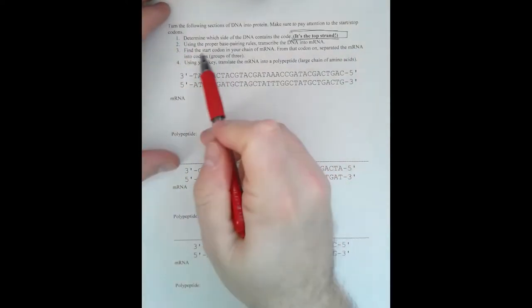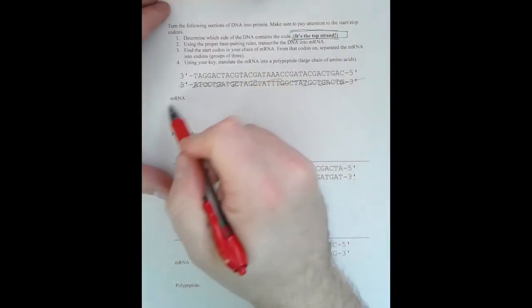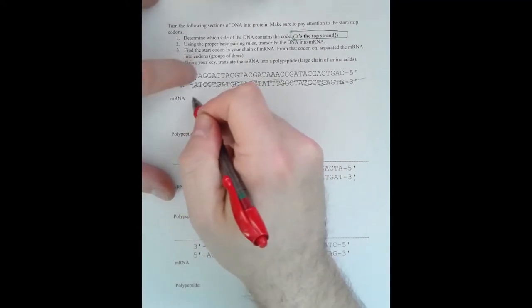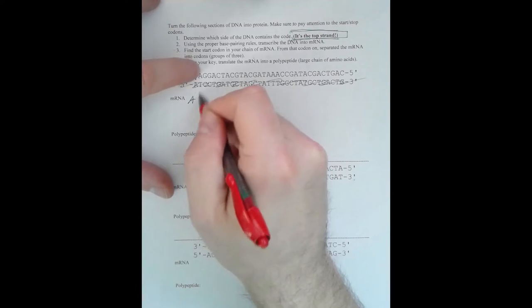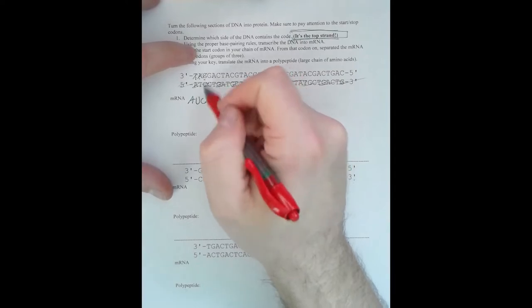Then you're going to use your base pairing rules. So pretty much this whole part down here we can just ignore that, and we're just going to do transcription. Remember, T is going to pair with an A, A would pair with a U, right, because there is no T in mRNA. That G is going to pair with the C.